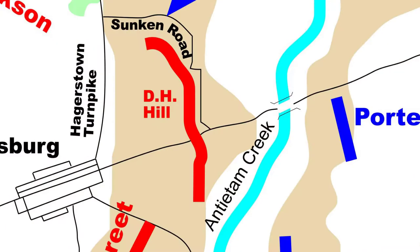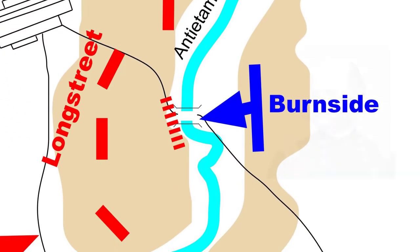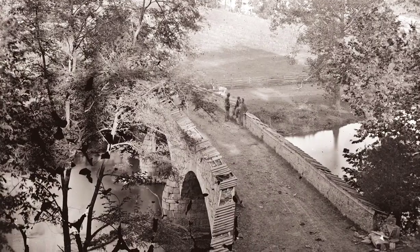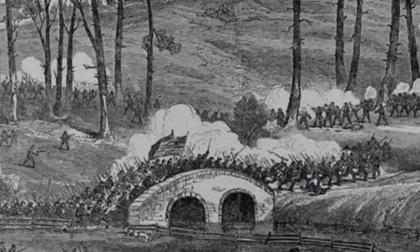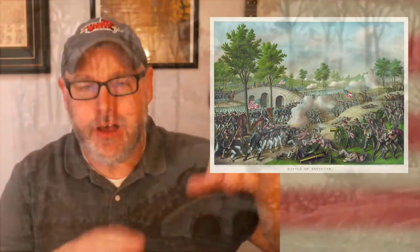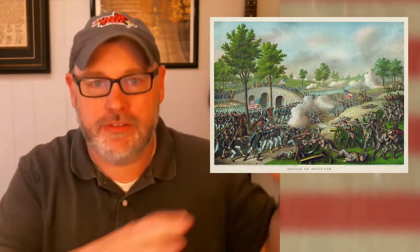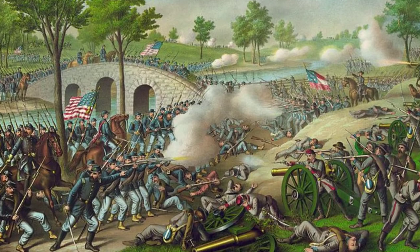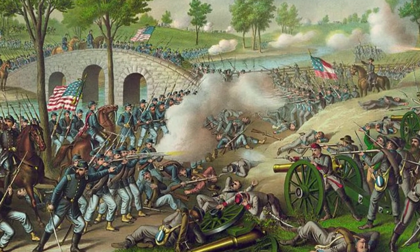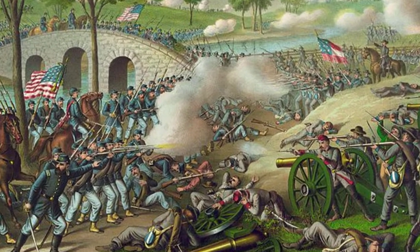At the southern end of the battlefield, Union General Ambrose Burnside and his troops fought to cross a small stone bridge over Antietam Creek. They were held off for hours by Georgia troops positioned on high bluffs above the bridge, shooting down at them. Eventually the Union troops crossed the bridge, but just as they did, Confederate reinforcements arrived from Harper's Ferry, Virginia, and forced the Union back across.